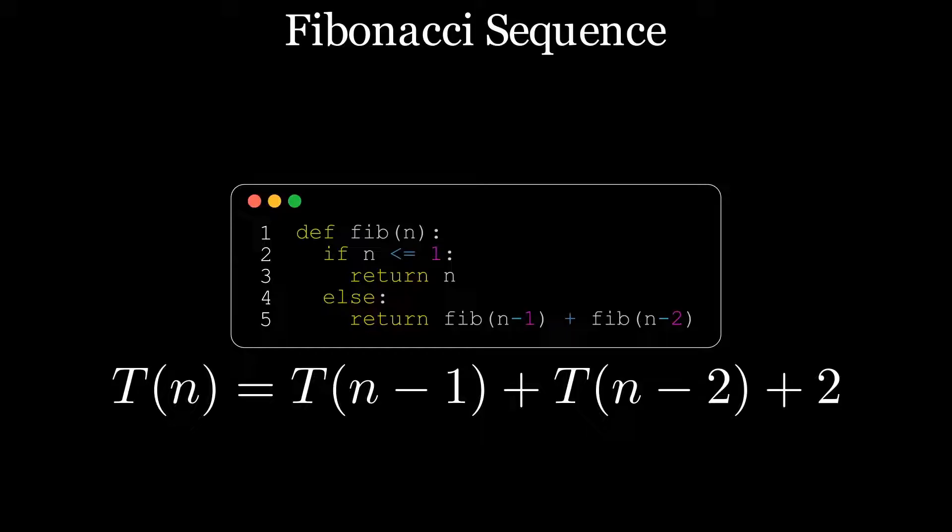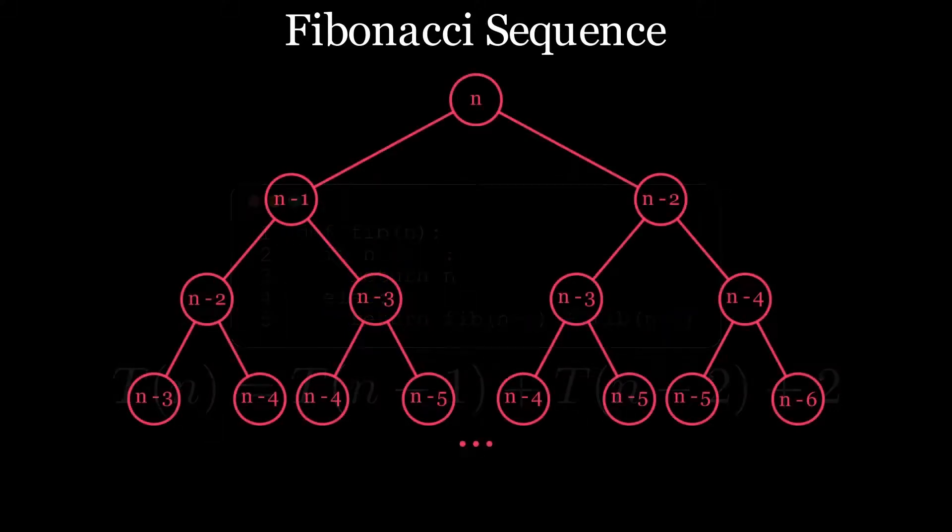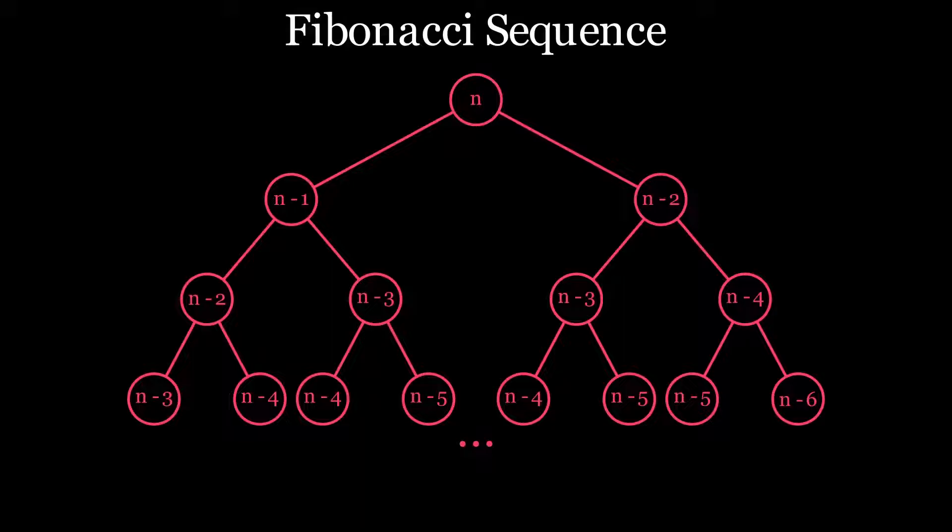Even on modern hardware, calculating the Fibonacci sequence in this way, using relatively small values for n, is going to be infeasibly slow. Looking back at the tree, we can see why.